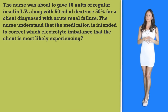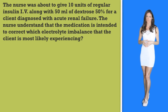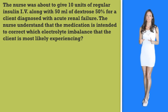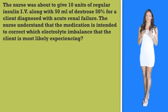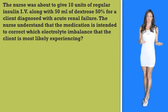The nurse was about to give 10 units of regular insulin IV along with 50 milliliters of dextrose 50% for a client diagnosed with acute renal failure. The nurse understands that the medication is intended to correct which electrolyte imbalance that the client is most likely experiencing.